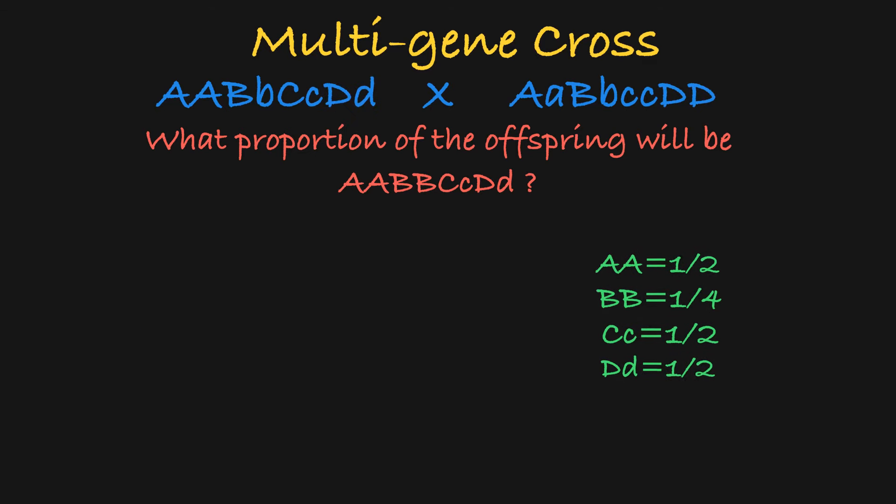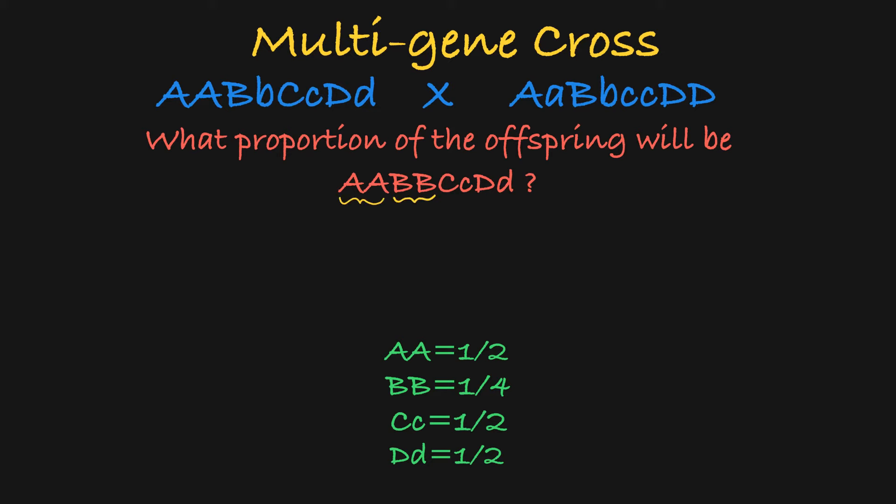Now that we have the probability of each individual event, we can say we want to know what the probability of this and this and this and this happening in the same organism. Because these are independent events, we will use the rule of multiplication, multiplying the probability of each individual event together to get the overall probability of this multi-gene genotype occurring in the offspring. And we see that the chance of these two parents having offspring with this genotype is 1 in 32.